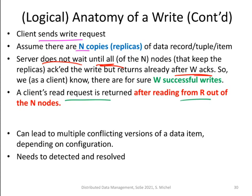Depending on how you set these parameters, you can configure the system either to guarantee consistency or to allow multiple conflicting versions of a data object. We will see how to set R, W, and N to guarantee strong consistency or to operate in eventual consistency mode.